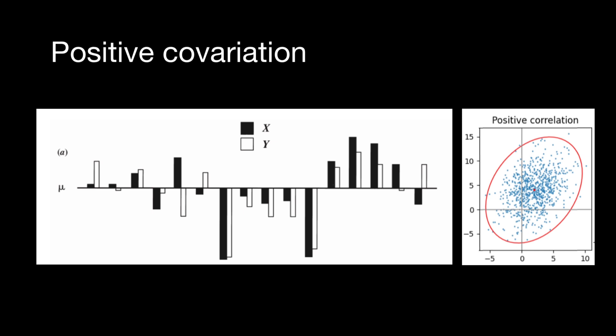Animal breeders are often concerned with how two traits or two values vary together. They are concerned in a word, covariation.